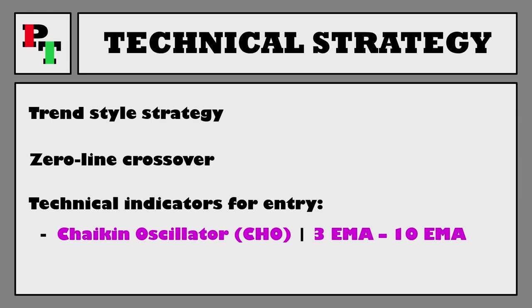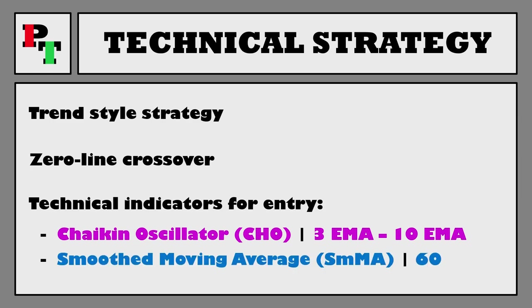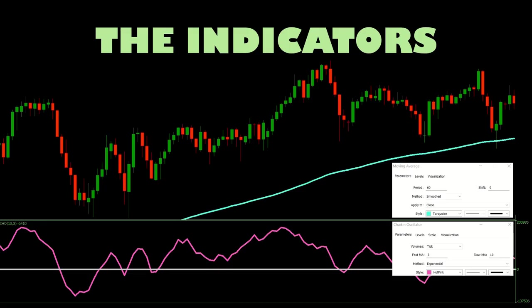We're jumping onto our second indicator, which is going to be a filter on our trades. Not every zero line crossover is going to be for us. We're going to be using a 60-period smooth moving average on the chart to help us out — the turquoise smooth average guiding the overall trend of the strategy.